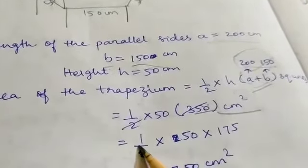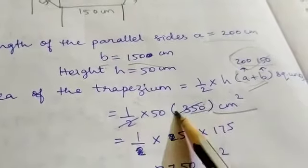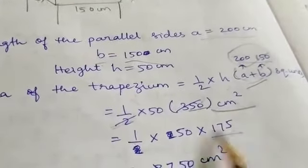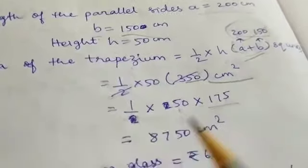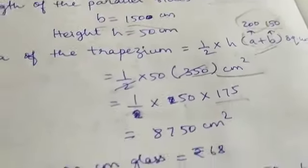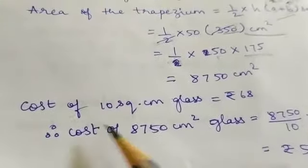Half into 50 into 350. In the half, 2 and 350 cancel to make 175. So 1 into 50 into 175, which is 8,750 cm square.